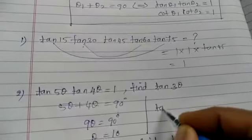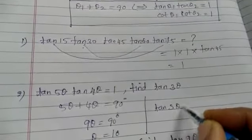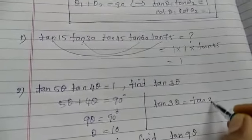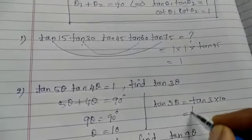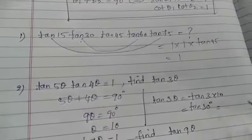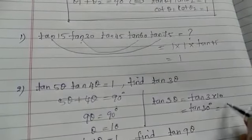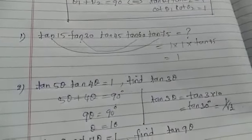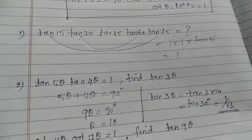So now substitute in tan 3 theta. 3 theta equal to tan 3 into 10, which is tan 30. So what is the value of tan 30? The answer is 1 by root 3.